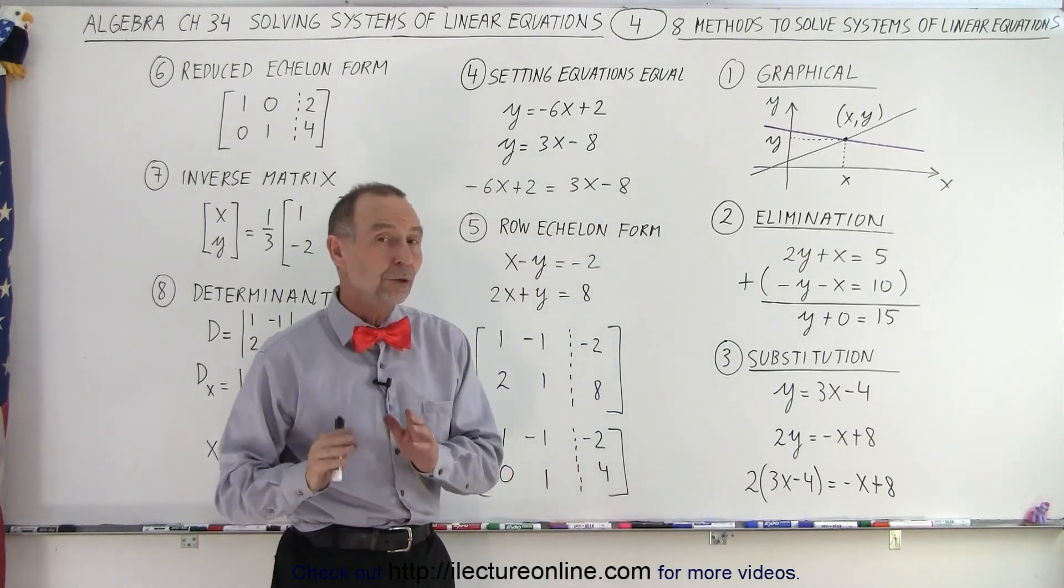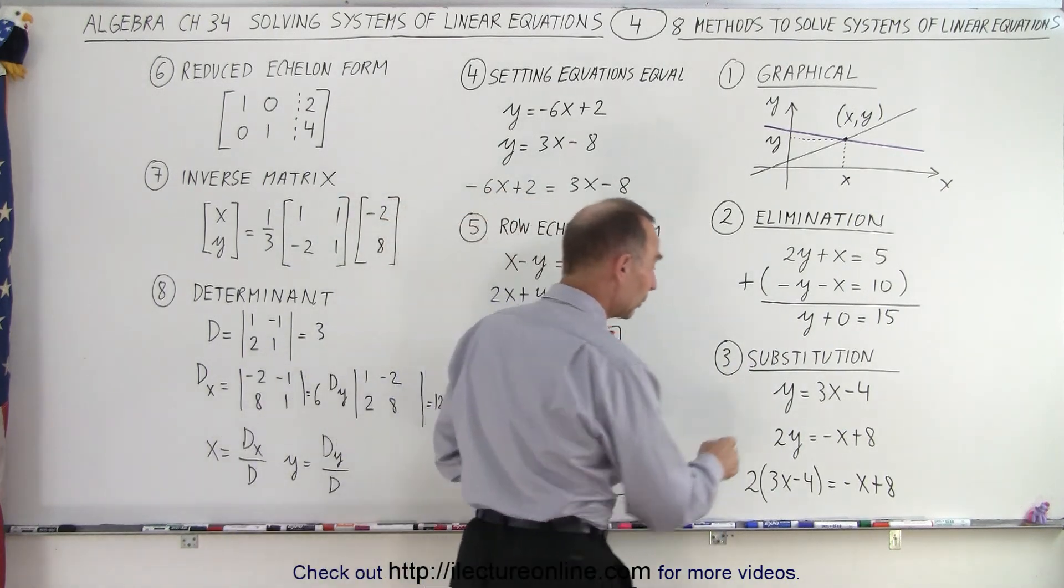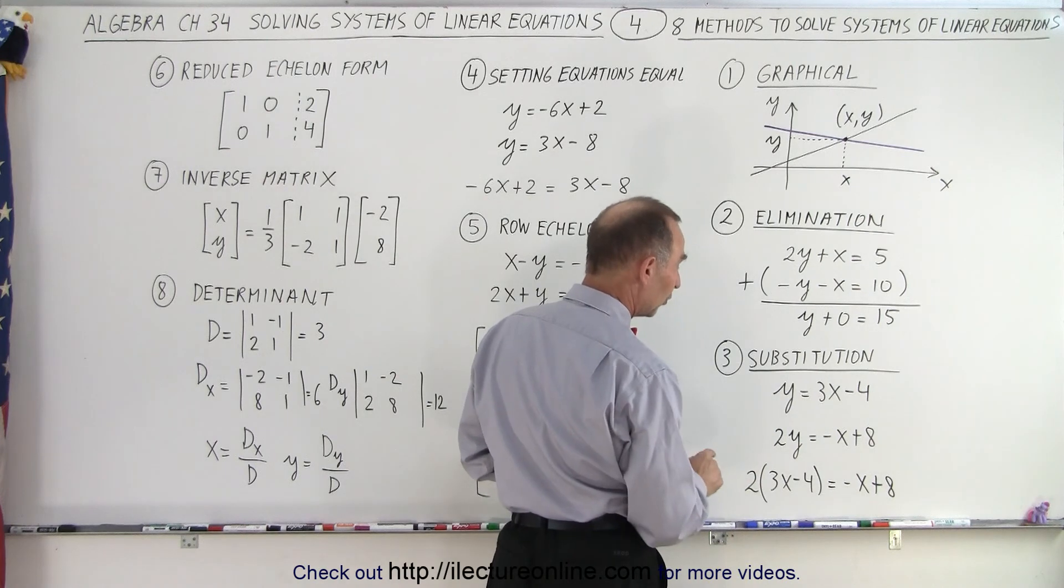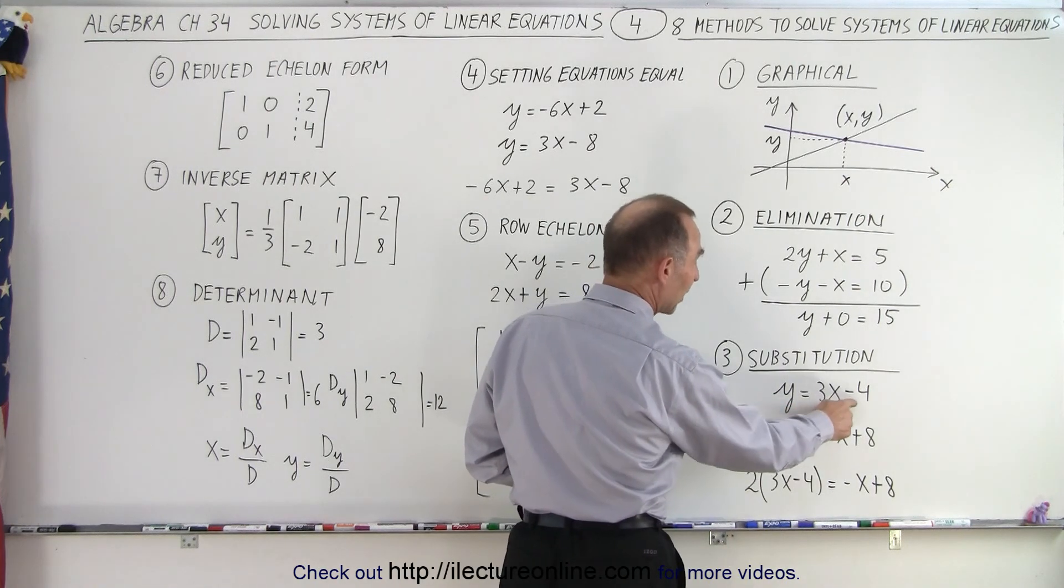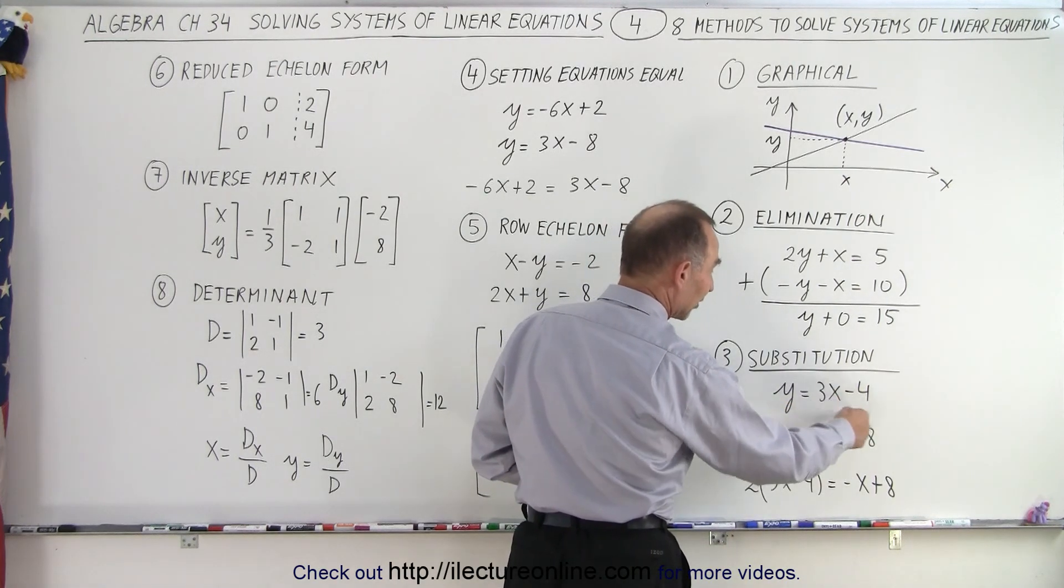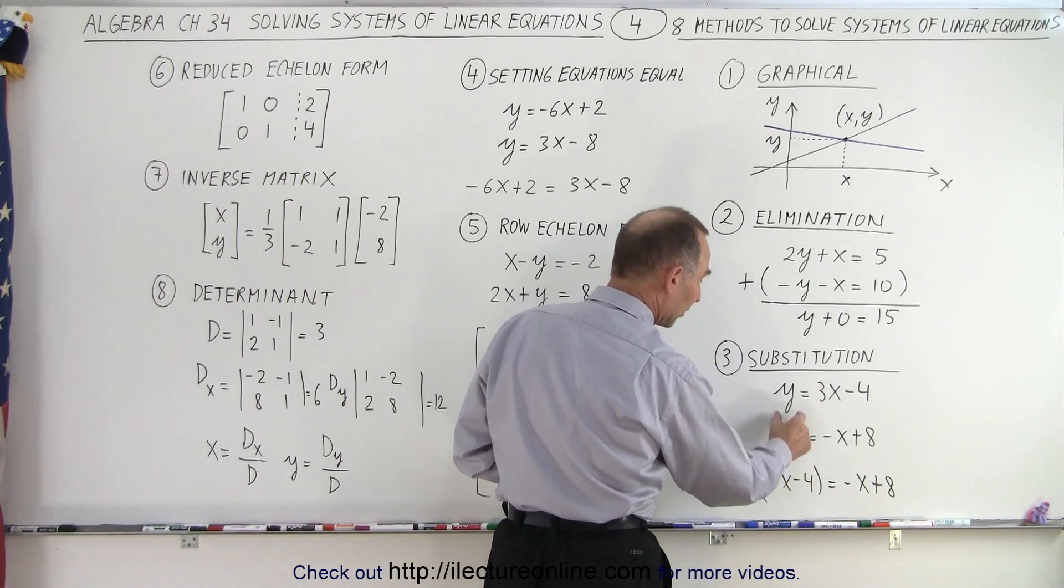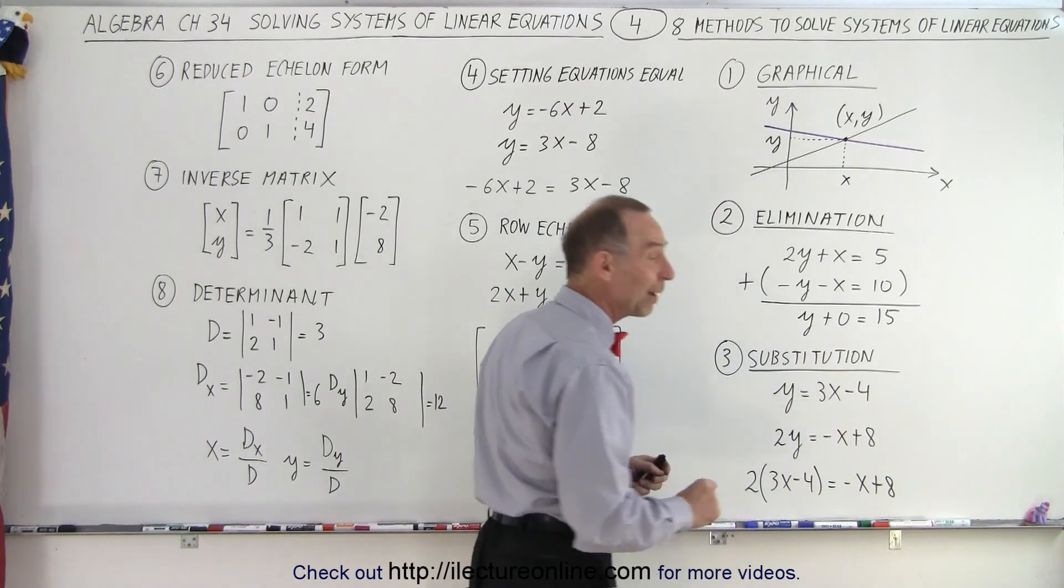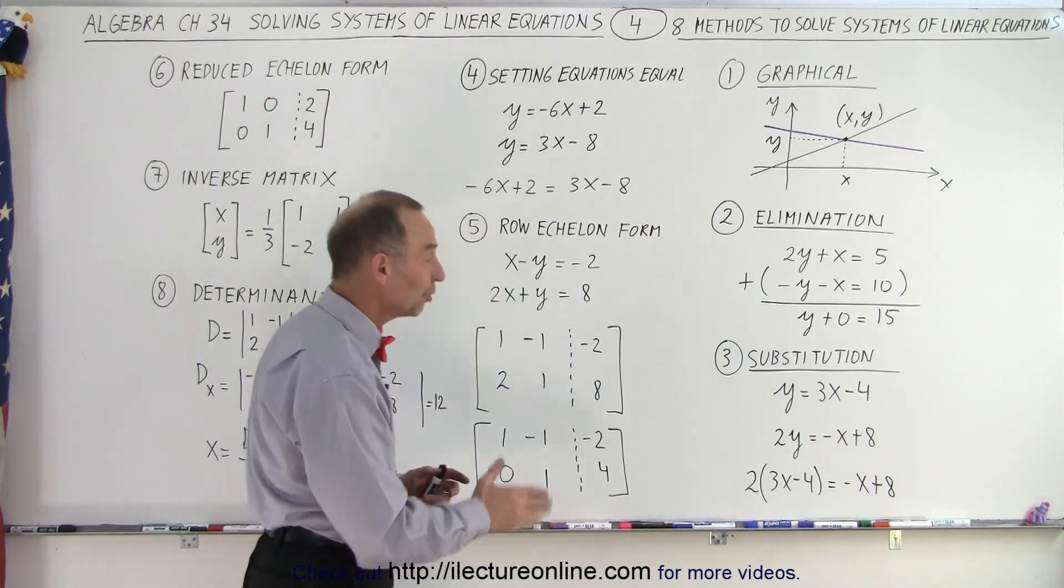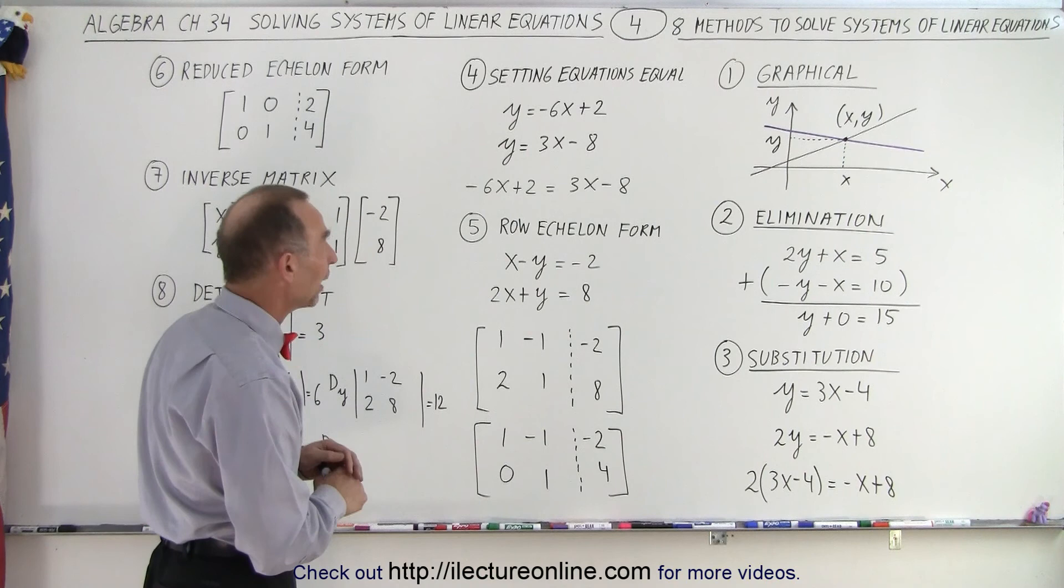Or we can use the method of substitution. Here we have two equations. And notice that y is defined as 3x minus 4. I can take that value for y and plug it into our second equation. So instead of writing y, we write what y is equal to, 3x minus 4. And that's the way in which you can solve for x and y.